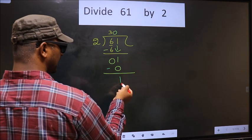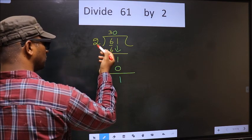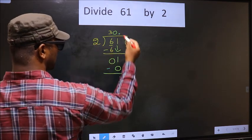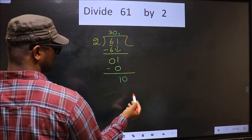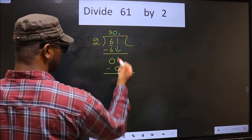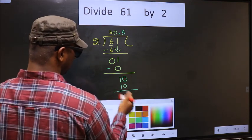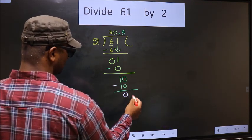We did not bring any number down here, and 1 is smaller than 2. So now you can put a dot and take 0 here. Now here we have 10. When do we get 10 in 2 table? 2, 5, 10. Now you subtract. 10 minus 10, 0.